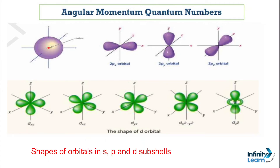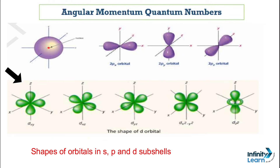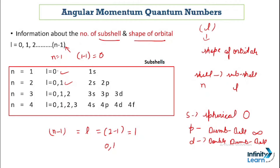The letter S here denotes the spherical shape of the sub-shell, P denotes a dumbbell shape, and D denotes a double dumbbell shape. These alphabets denote the shape of the sub-shells. When the value of L is 0, we get the 1S sub-shell. When we get values of L as 0 and 1, we get 2S and 2P as sub-shells.